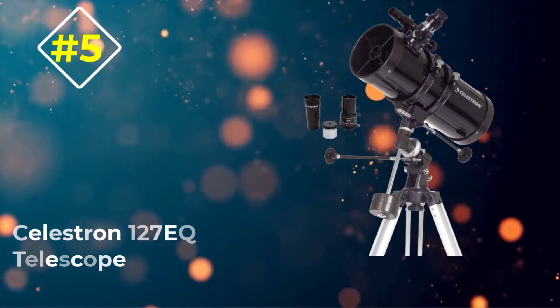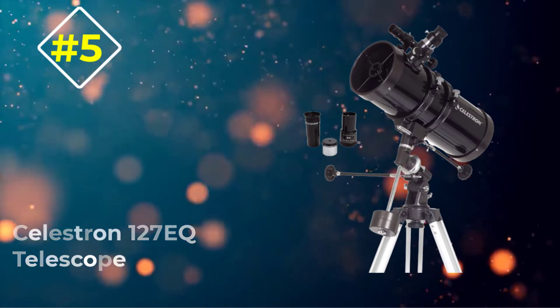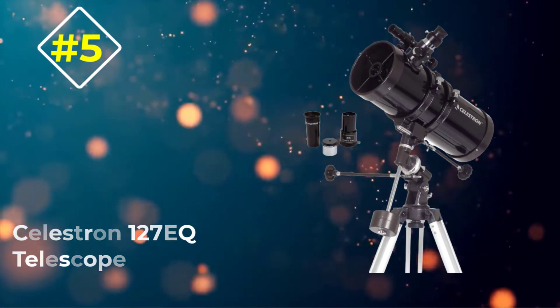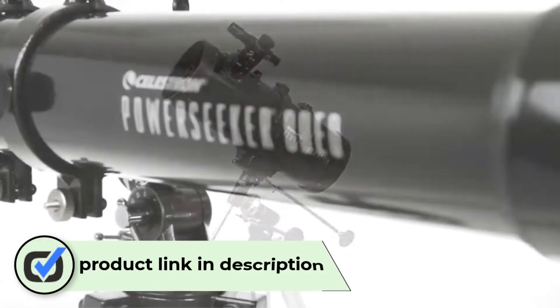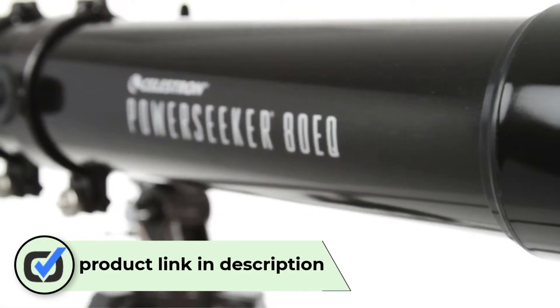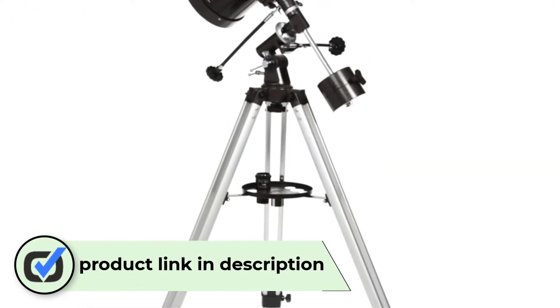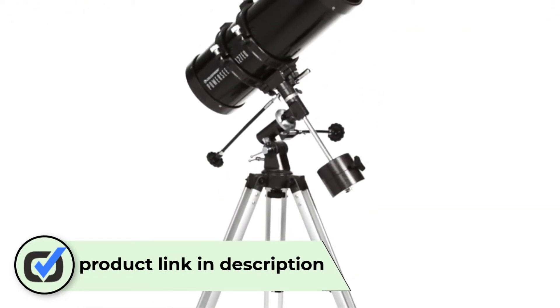Number 5: Celestron 127 EQ Telescope. Second to last we feature the Celestron Power Seeker. This unit is compact and easy to store, making it a good option for people who need to frequently transport their telescope.